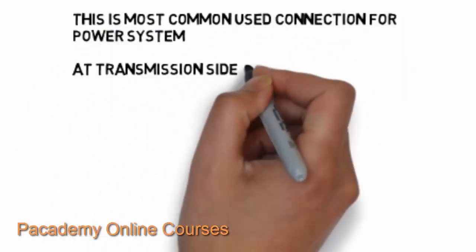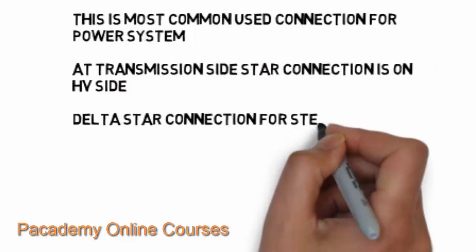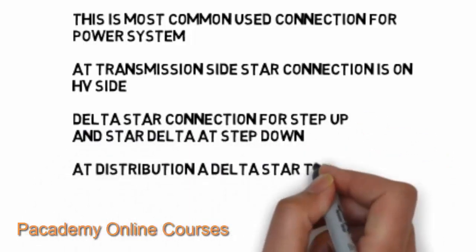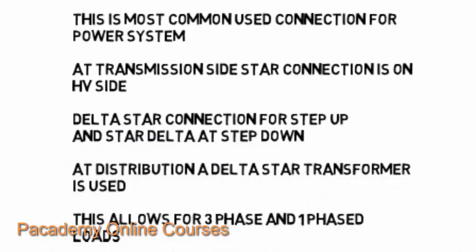The star-delta connection is the most commonly used connection for power systems. At the transmission side, the star connection is on the high voltage side and the delta connection is on the low voltage side. The delta-star connection is used for step-up and star-delta connection is used at the step-down end of the transmission system.